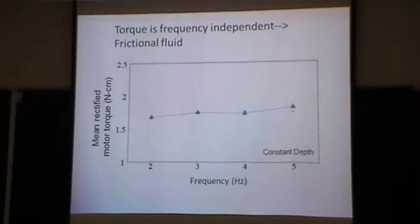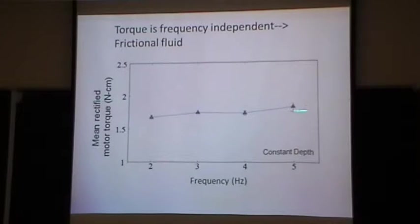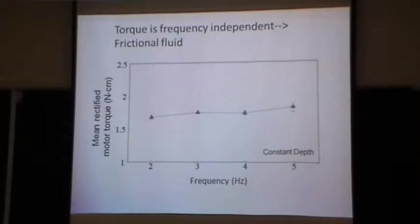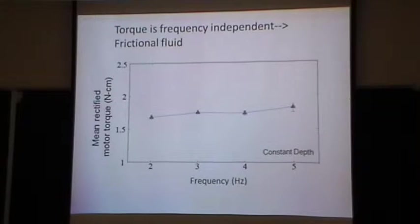You can then ask how torque changes as you vary undulation frequency. It's essentially flat — independent of frequency — meaning friction is dominating, inertial forces are small, and since friction is speed-independent, the force required to move through the material is essentially independent of frequency.